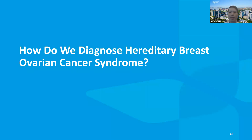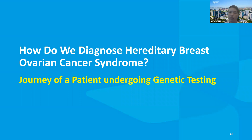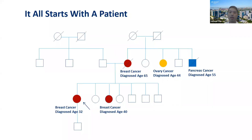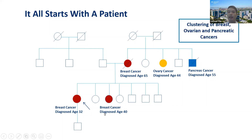How do we diagnose patients with HBOC? Let's go through the journey of a patient undergoing genetic testing. Here is a pedigree — the arrow refers to my patient, a 32-year-old with newly diagnosed breast cancer, as well as her sister who had breast cancer at 40, and her mom who died of breast cancer at 65. Her mom had a sister with ovarian cancer at 44, and a brother who succumbed to pancreatic cancer at 55. There's clustering of breast, ovarian, and pancreatic cancers — there is some suspicion of HBOC.